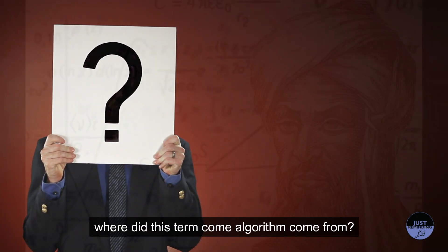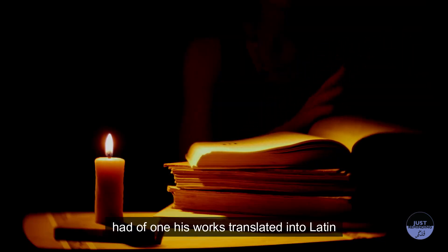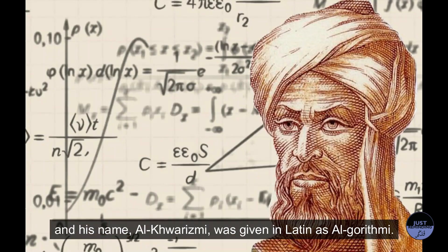where did this term algorithm come from? Al-Khwarizmi, the distinguished Muslim mathematician, astronomer and geographer, who is known as the father of algebra, had one of his works translated into Latin, and his name, Al-Khwarizmi, was given in Latin as Algorithmi.